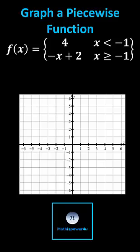To graph the piecewise defined function, we first graph f of x equals four when x is less than negative one.